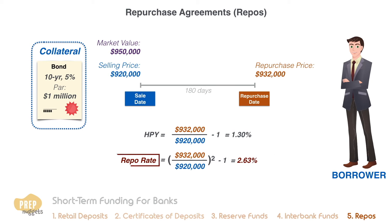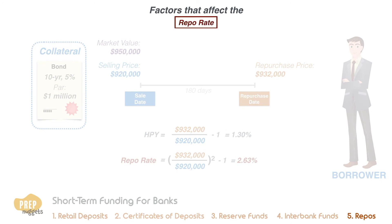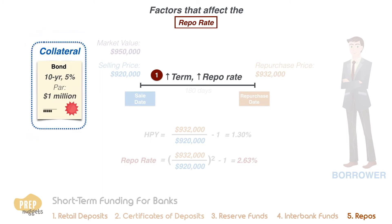What are the factors that affect the repo rate? Firstly, like most other debt securities, the longer the term, the higher the repo rate. Unlike other debt securities, the credit quality of the borrower is not that important. Instead, the credit quality of the collateral is much more important. The higher the credit quality, the lower the repo rate.